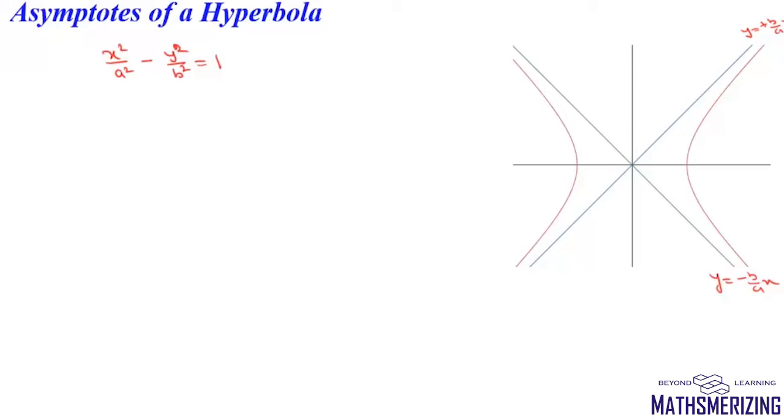This first result is: suppose we have any double ordinate of a hyperbola which is P and P', and if it is produced both ways to meet the asymptotes at Q and Q', we need to prove that PQ times P'Q equals b squared.